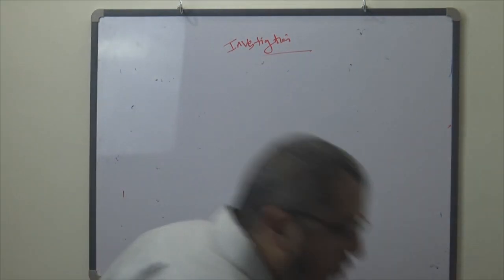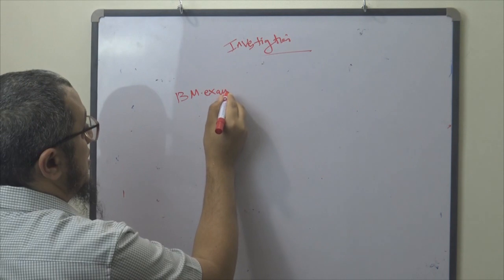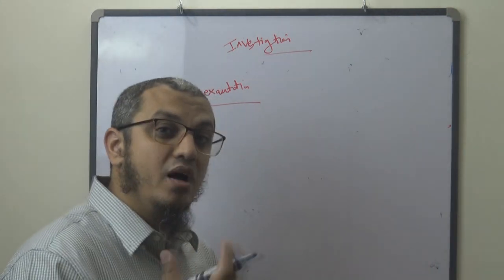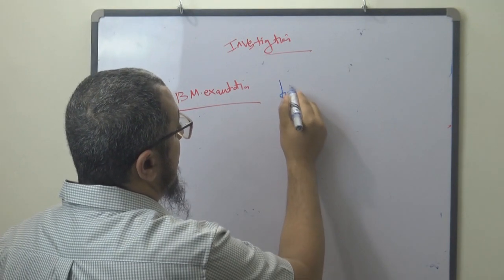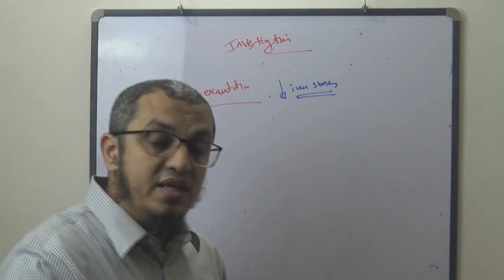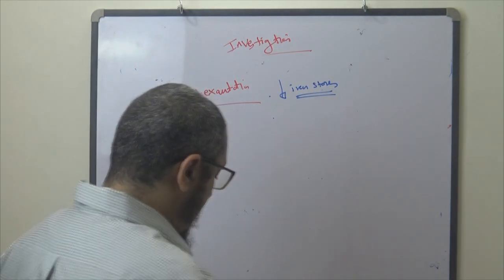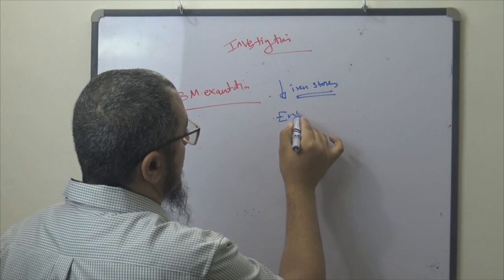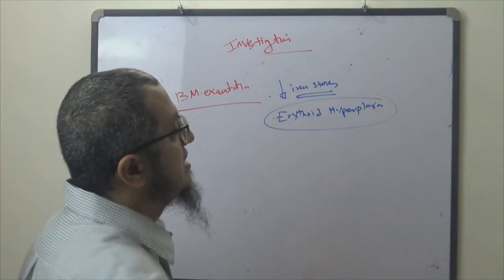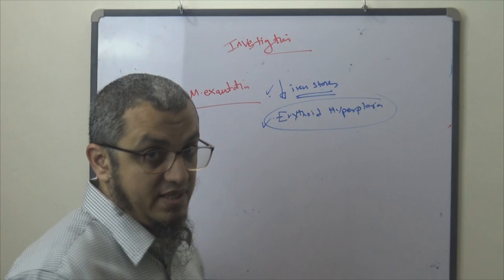Another investigation, though not commonly done in iron deficiency anemia, is bone marrow examination. In the bone marrow you will find decreased iron stores, and you will find erythrocyte hyperplasia because the bone marrow is active trying to synthesize erythrocytes to replace the deficiency.